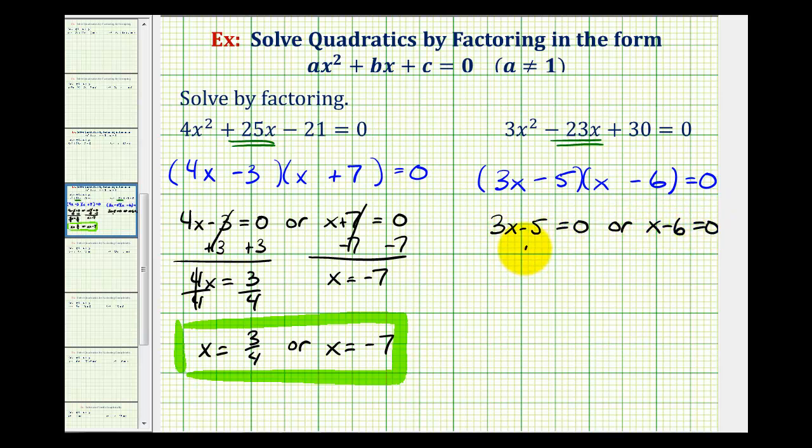So here we would add 5 to both sides. So we have 3x equals 5. Divide both sides by 3. So we have x equals 5 thirds.